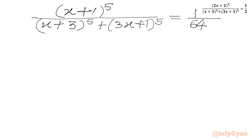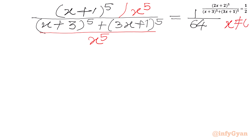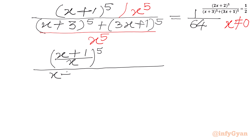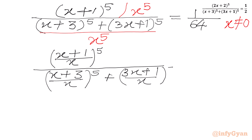Now we will divide the numerator and denominator by x^5. Since we know x cannot be equal to 0, this is valid. So we get (x+1)/x whole power 5 over (x+3)/x whole power 5 plus (3x+1)/x whole power 5, equal to 1/64.